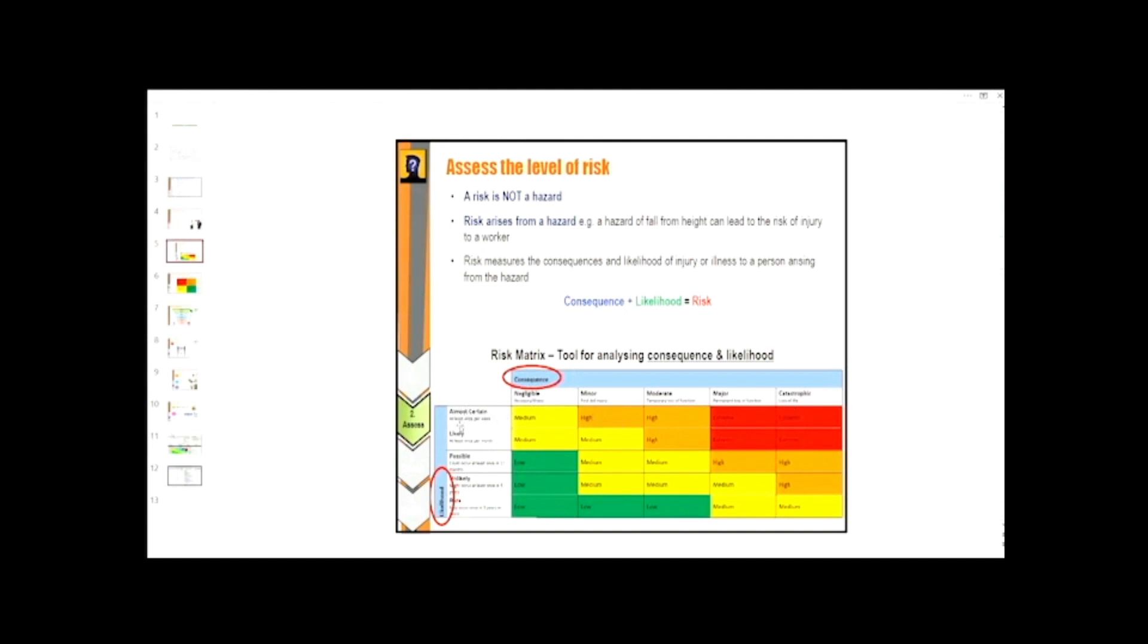How often is it likely to happen? If it happened at least once a week, the level is extreme.